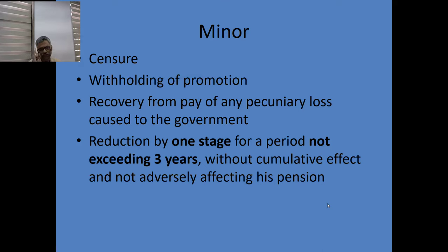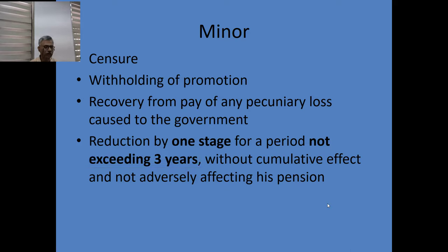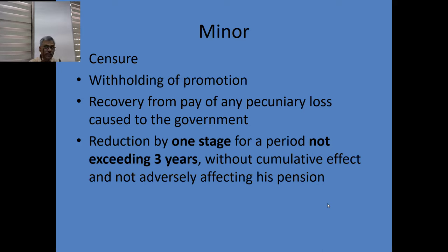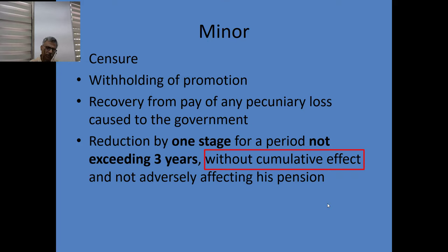The minor penalty of reduction can only be by one stage — it cannot be for two or three stages. It has to be only for one stage, and that also cannot exceed three years. So you can reduce by one stage — one stage means one increment — for a period of one year, two years, or three years.